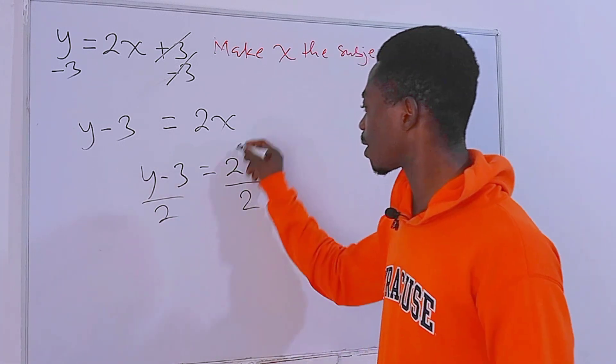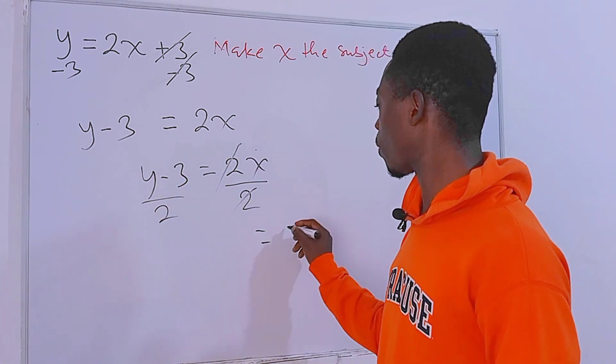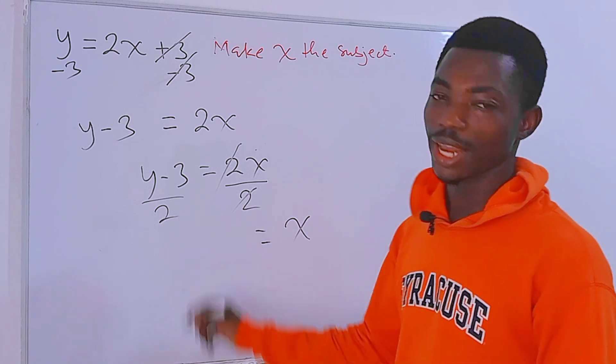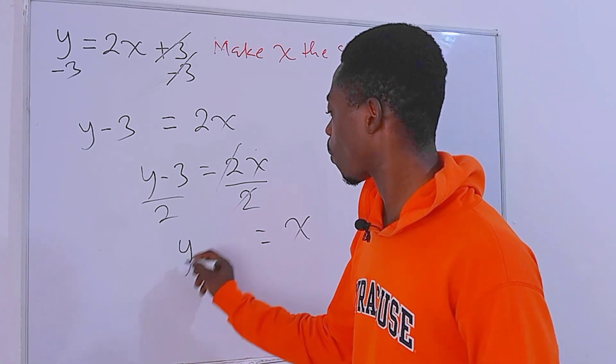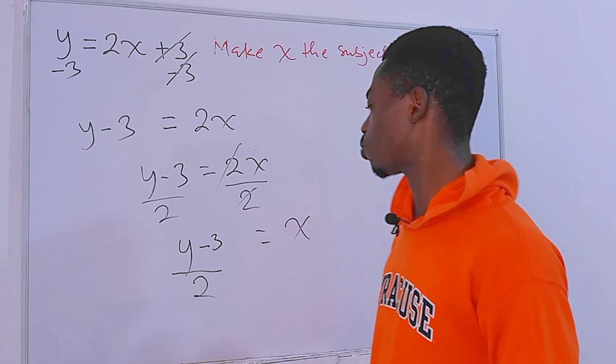And now we can clearly see that this and this will cancel. On the right we are left with x, then on the left hand side we are left with y minus 3 all divided by 2.